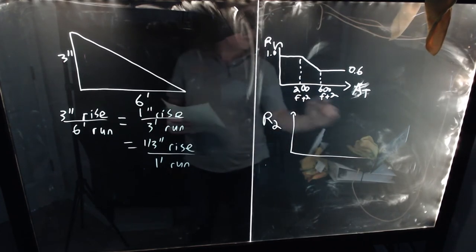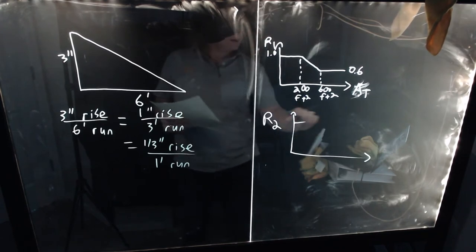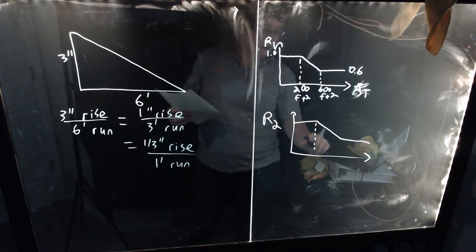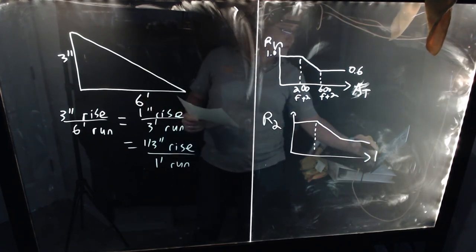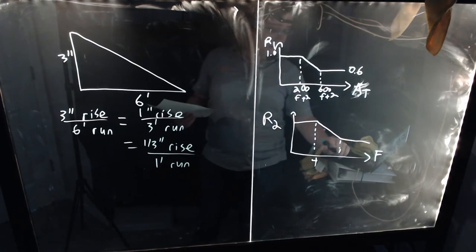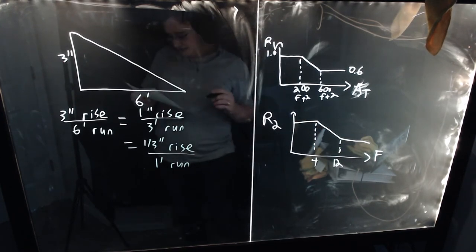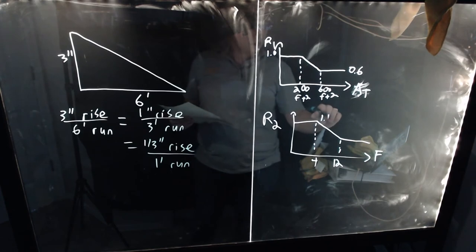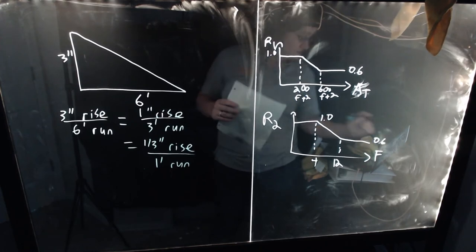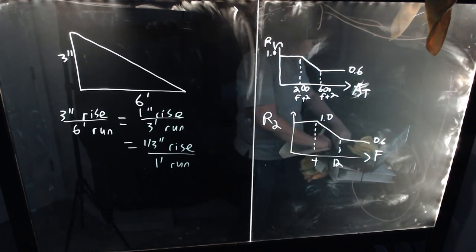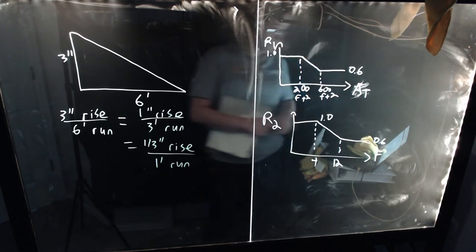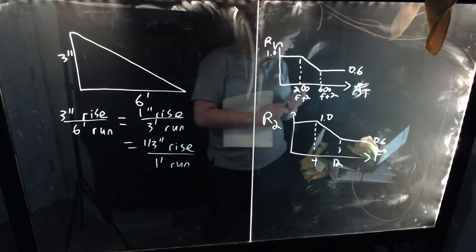And then R2 is similar. Another two constant portions divided by a downward sloping line. Except we have here, this is our F value, our number of inches of rise per foot of run. This is 1, this is 4, and this is 12. And this here is 1.0, and this is 0.6 as well. Alright. And really, that should do it.